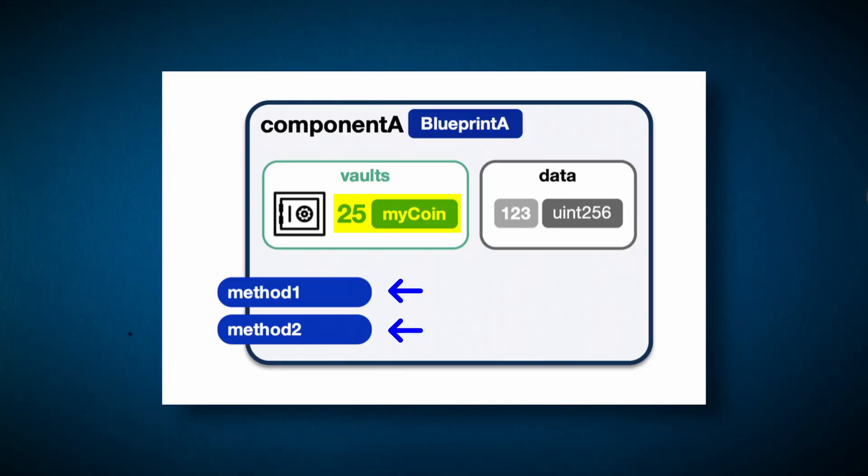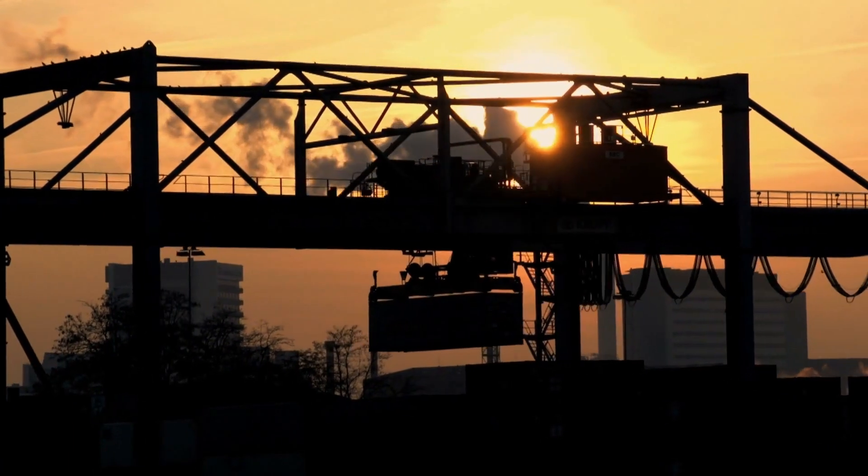In terms of interacting with these components, it's also a bit different in Scrypto. The methods that allow you to interact with a component can directly accept resources themselves. When we pass a resource to a component, we're actually transferring ownership of the tokens to the component. The caller no longer has access to that bucket of tokens — it's been transferred away, and the component can now put the resources into a vault or another bucket. This results in a much simpler and safer way of handling assets because it involves fewer smart contracts, fewer calls, and just overall less room for error.